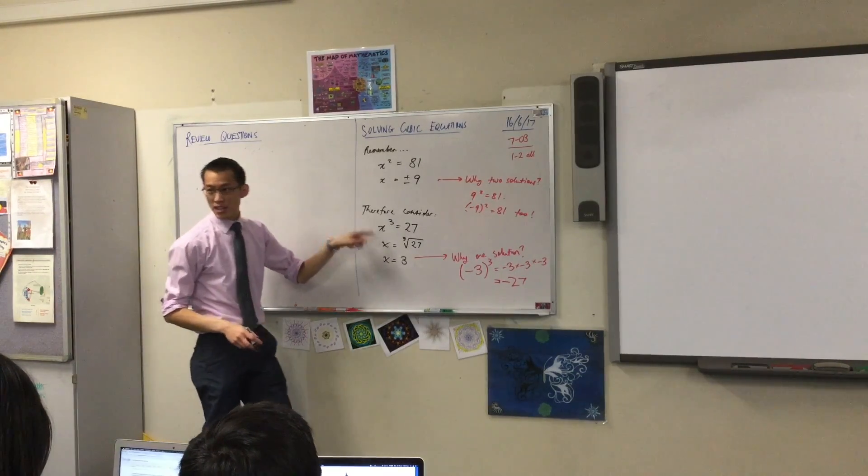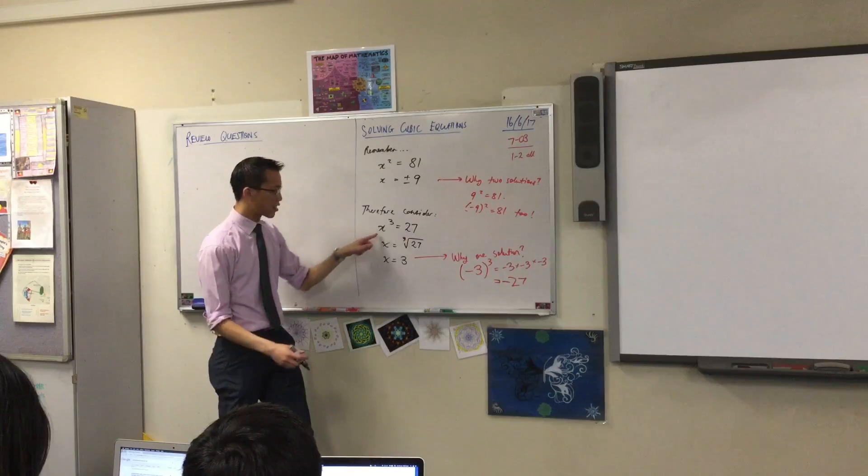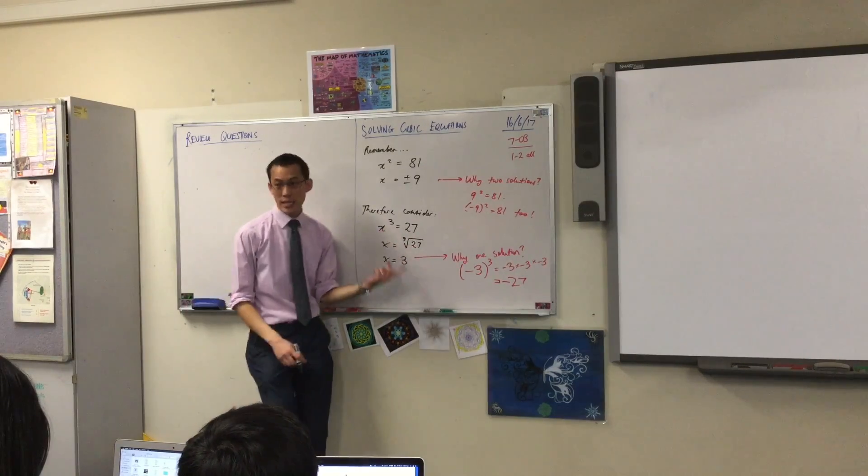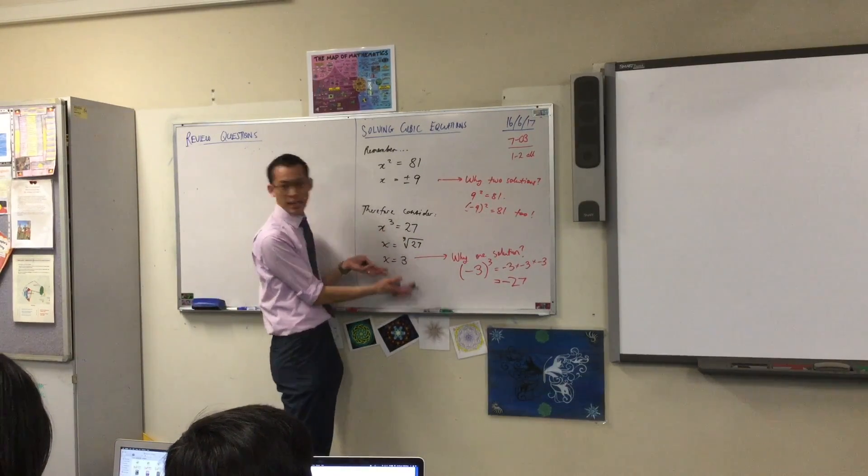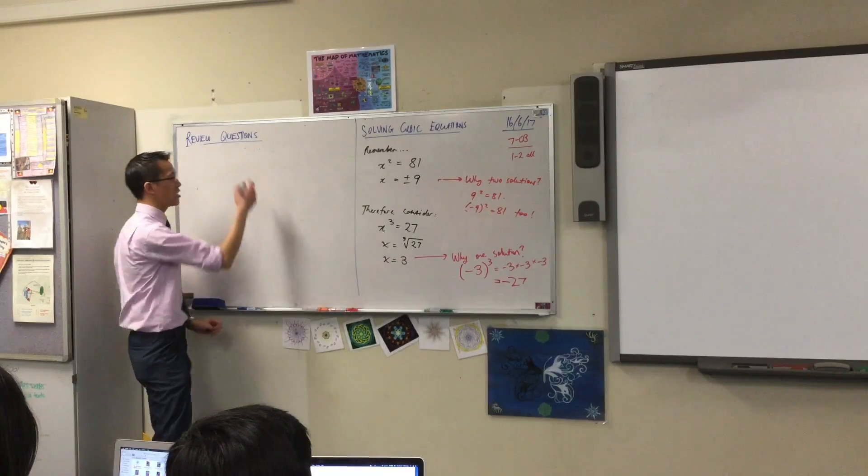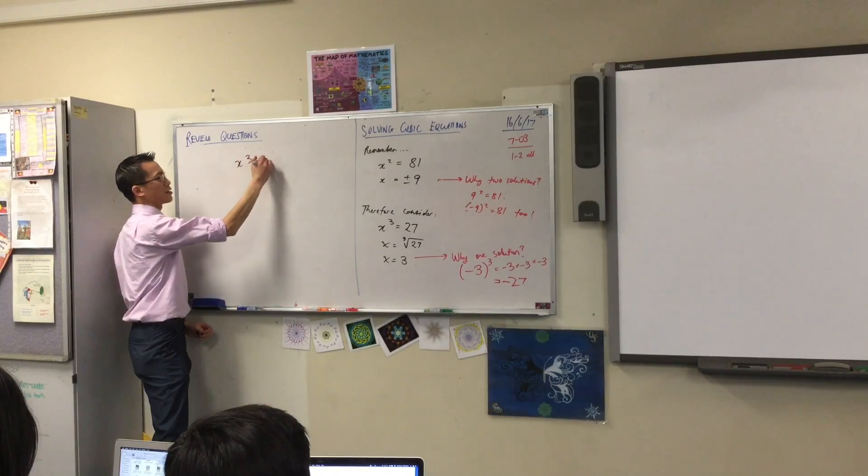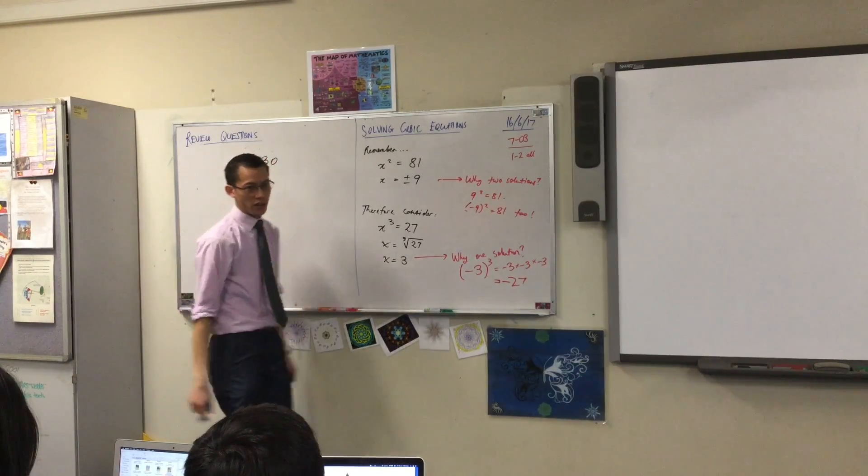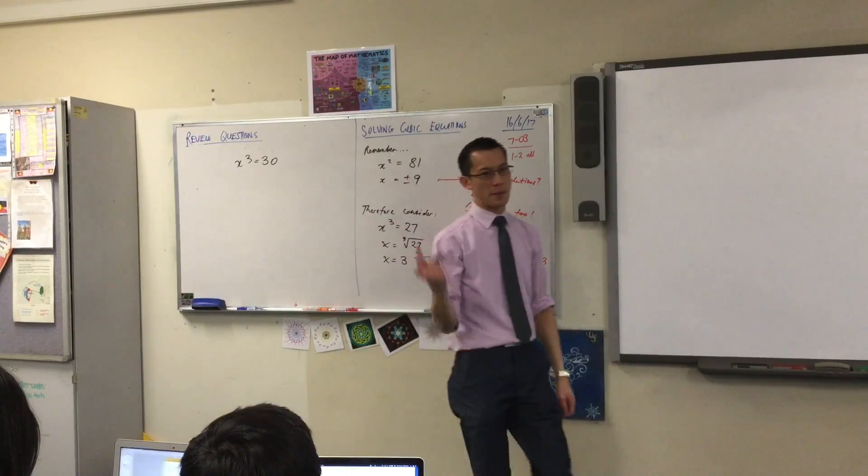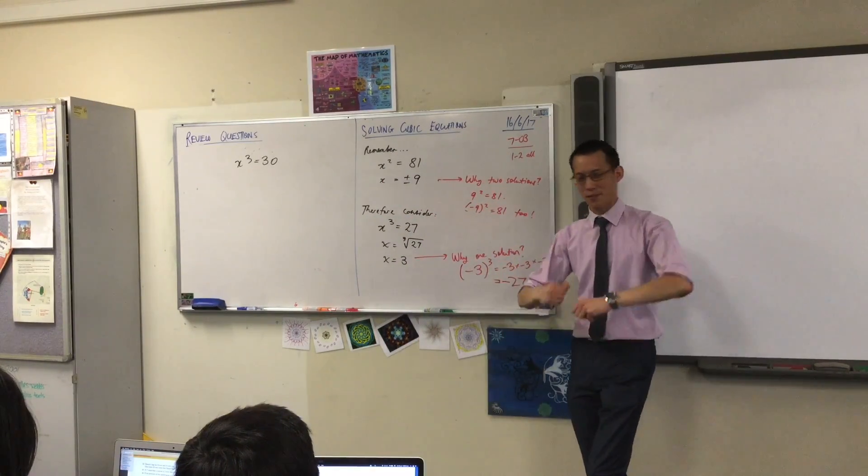I chose x cubed equals 27, because 27 is a cubic number. It gives you a nice, neat answer at the end. But I can very easily change that. I can ask you to solve this. 30 is not a cubic number. A lot of people will look at that and they'll write 10, because they're like, I could divide by 3.